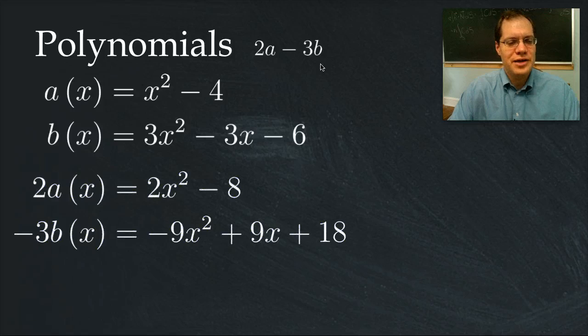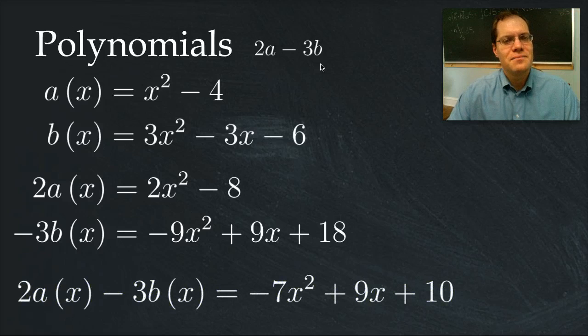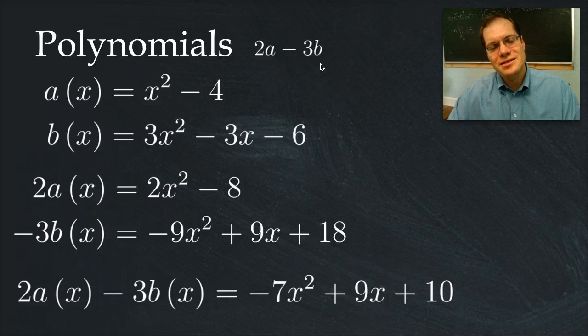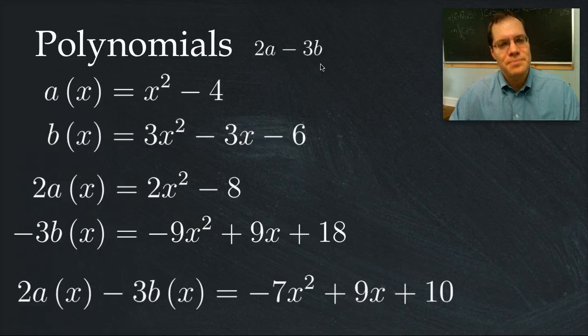So let's first evaluate 2a and negative 3b. You can pause the video to make sure those are correct. Here is 2a minus 3b. Take a moment to make sure this answer is correct. We once again see that the concept of linear combinations can be applied to polynomials, and the result is another polynomial.